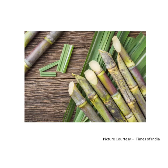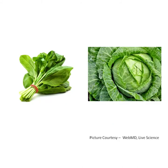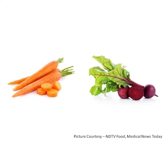Sugarcane is a stem which we eat. We eat the leaves of spinach and cabbage. Carrots and beetroots are roots. We eat them as salad.